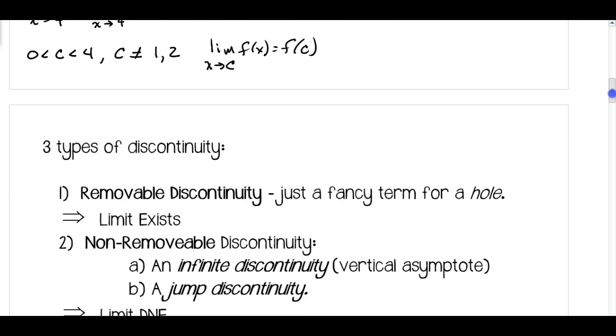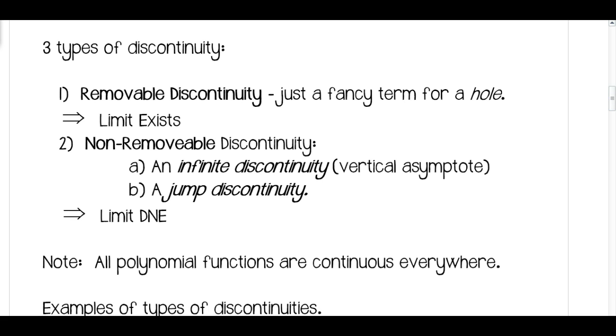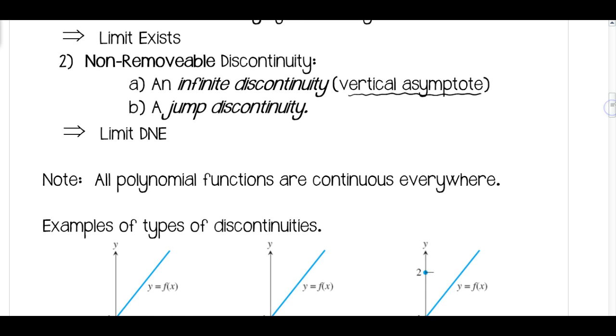With discontinuity, there's going to be three types. There's going to be a removable discontinuity, and really this is just a fancy term for a hole. In this case, we could have a limit that exists. Or we could have non-removable discontinuity, and the two types of this would be an infinite discontinuity, which would just be a vertical asymptote. Or we could have a jump discontinuity, where there's actually a split in the graph. In these cases, the limit would not exist.